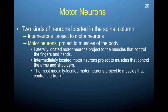There are two kinds of motor neurons. There are interneurons, which project to motor neurons, and then there are motor neurons, which project to the muscles of the body. Motor neurons located laterally project to the muscles that control the fingers and hands. More medially located motor neurons project to muscles controlling the arms and shoulders, and the most medially located motor neurons project to muscles controlling the trunk.